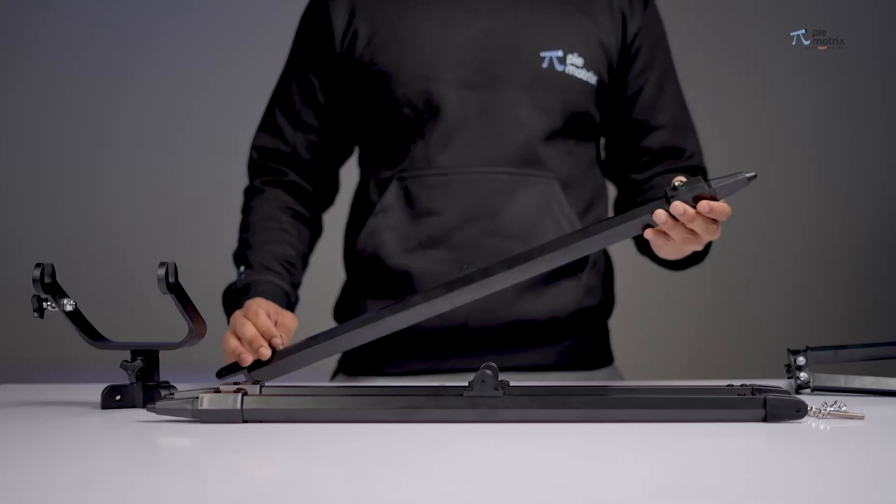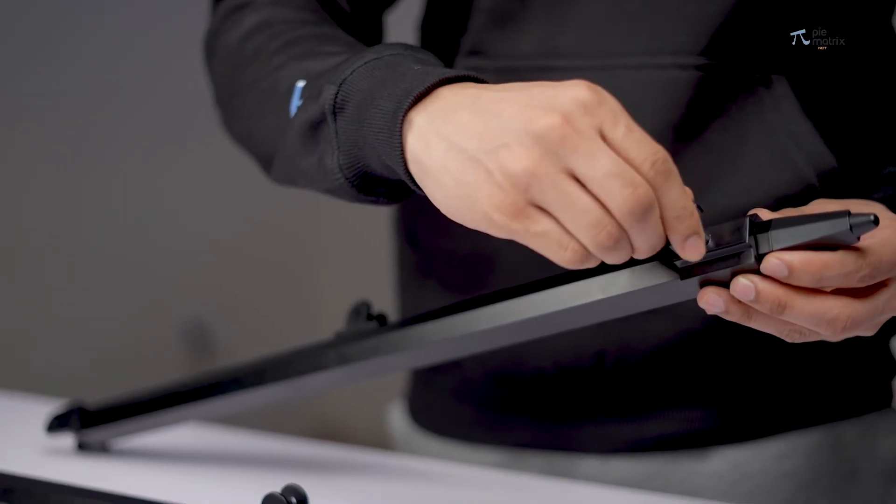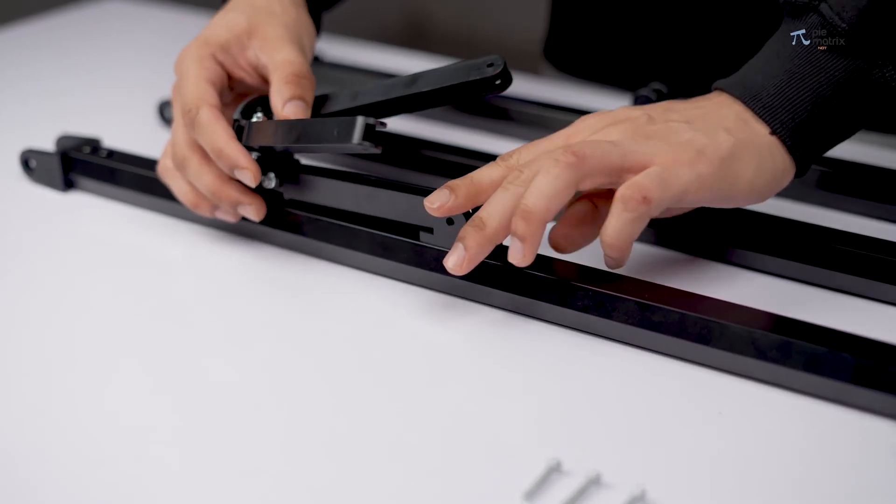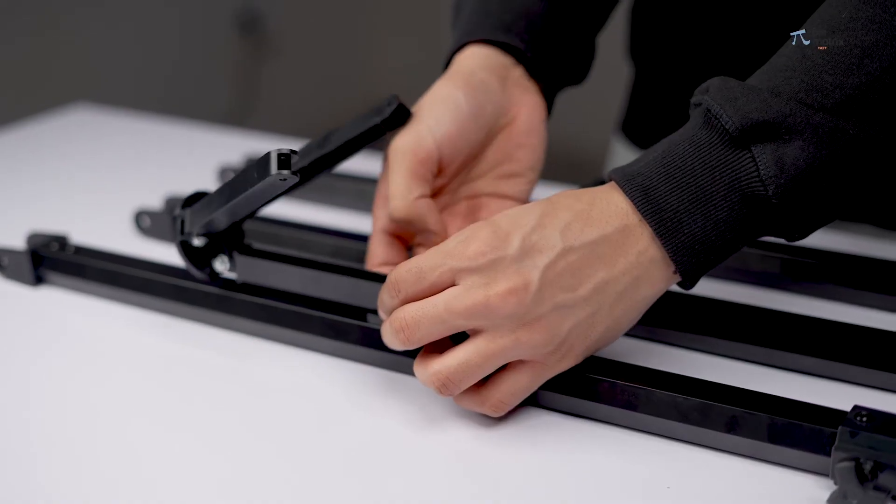We start the installation by taking each leg and screwing it with the help of appropriate knob. Now, take the central brace and connect all the legs of the tripod using it. Carefully affix it with the provided screws.